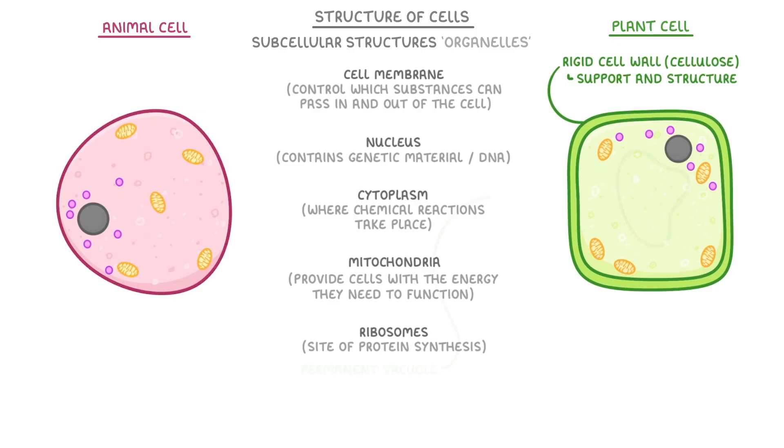Next, a lot of the cell is often taken up with this thing called a permanent vacuole. You can think of this as a big sac that contains cell sap, which is basically a mixture of sugars, salts, and water the cell can use when it needs to.